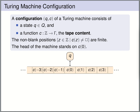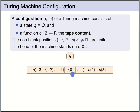A configuration of a Turing machine is a pair consisting of a state and the tape content. The state is a member of Q, and the tape content is a function from the integers to gamma — for every integer, it tells us what symbol stands at that position. The head stands on the symbol indexed with zero; to the right we have c(0), c(1), c(2), and to the left c(-1), c(-2), c(-3), and so on.